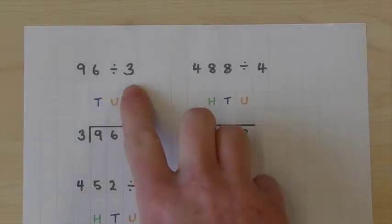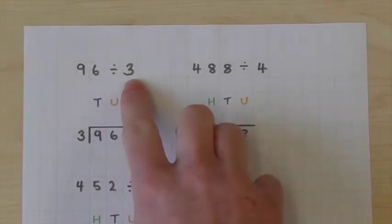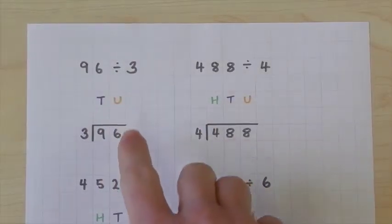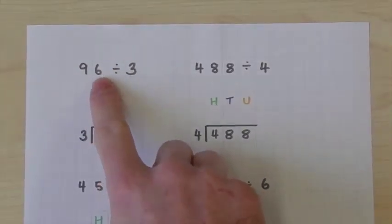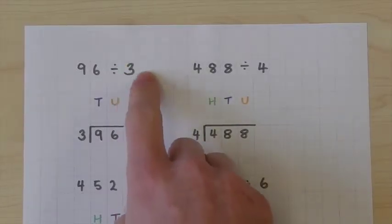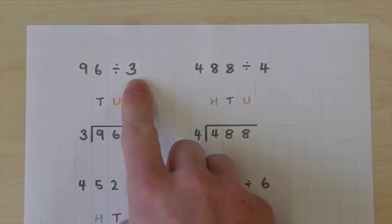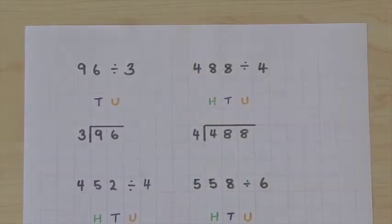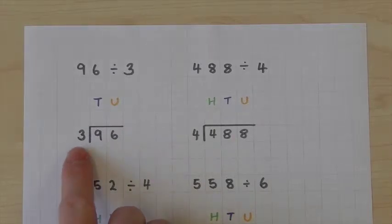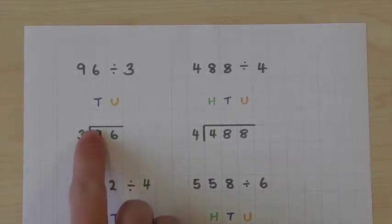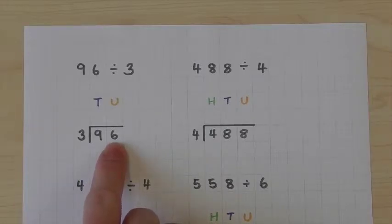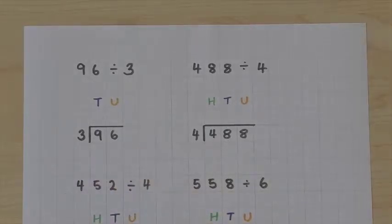If we look at the first example, 96 divided by 3, we can see that the number we are dividing is on the left hand side — this is known as the dividend. The number we are dividing by is on the right hand side — this is the divisor. When we write out our short division method, we swap the numbers around so the divisor is outside of the division bar and the dividend is inside. It is very important that you remember this.